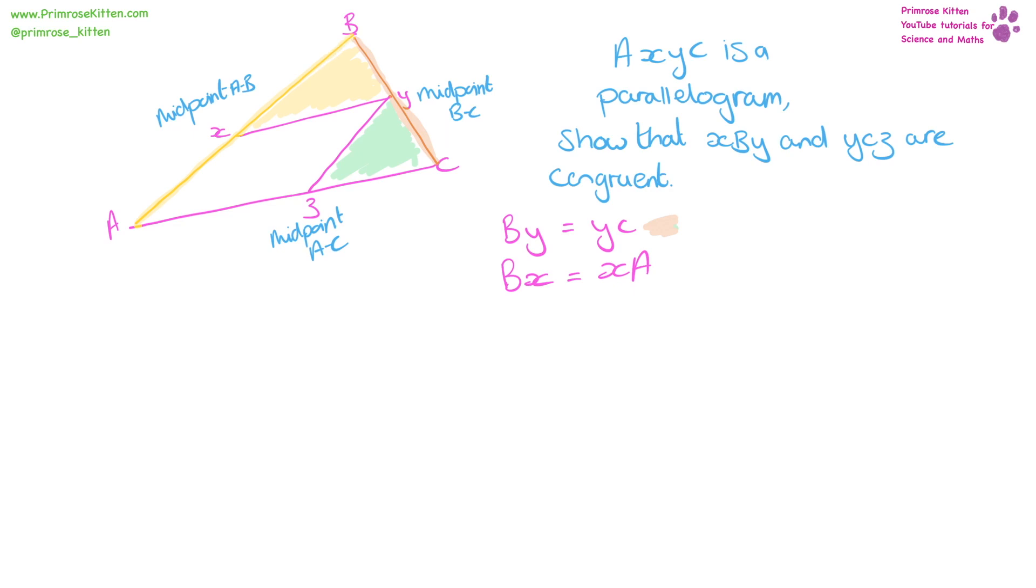And then we know because opposite sides of a parallelogram are equal, we can also say that that is equal to ZY. So I can color that in, that line in as well. Those three sides are the same. Now you can see here how coloring stuff in starts to become really useful.